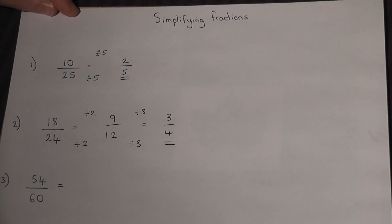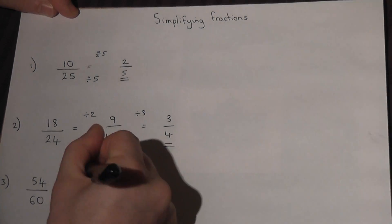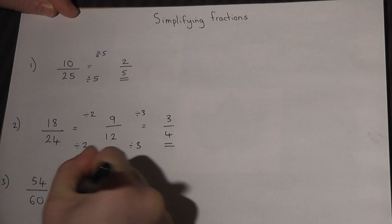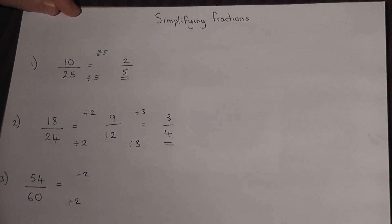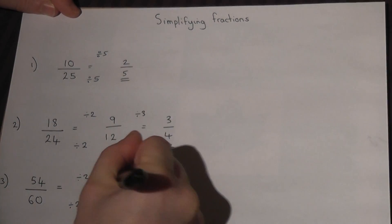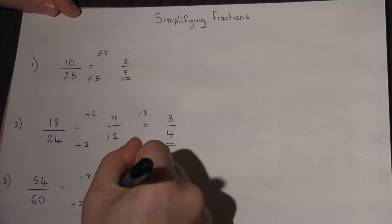Now the last one, again, look for the obvious factors. I can see that they are both even, so I can divide by 2, which gives me 27 over 30.